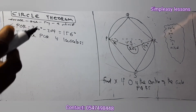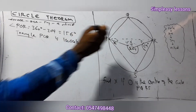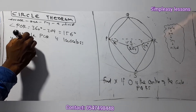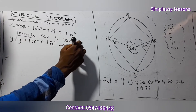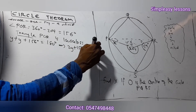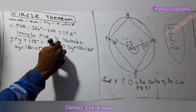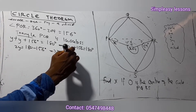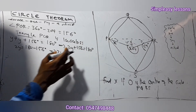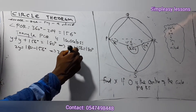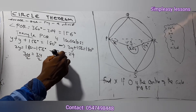Since triangle POR is isosceles, if one base angle is y, the other is also y. The total angles in a triangle add up to 180 degrees. So y plus y plus 156 degrees equals 180. That gives 2y equals 180 minus 156, which is 24. So 2y equals 24, meaning y equals 12 degrees.